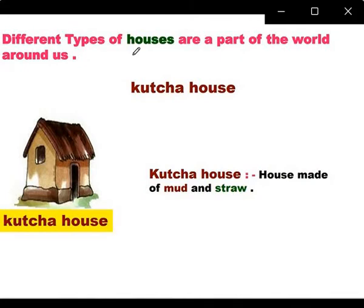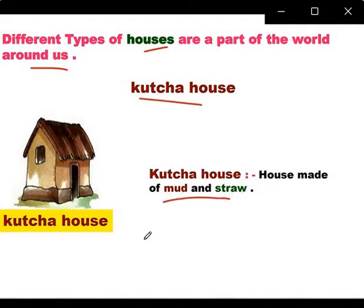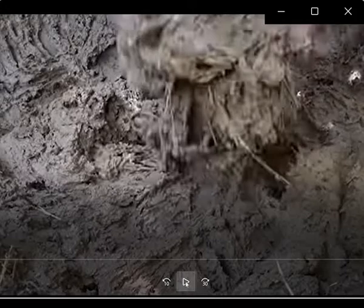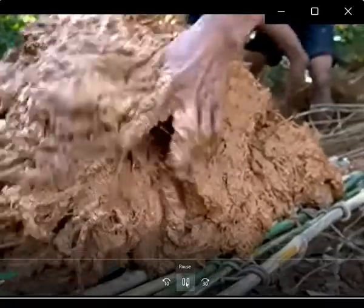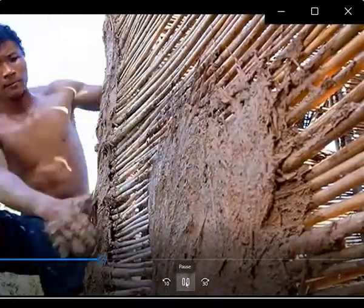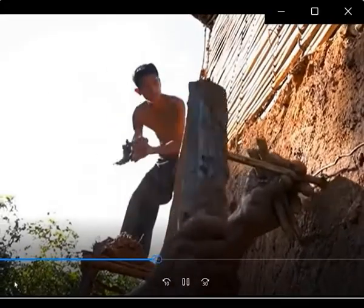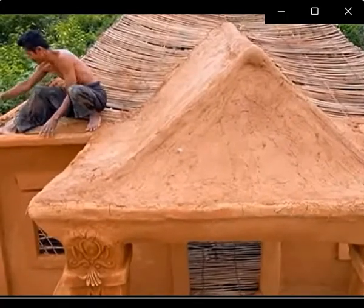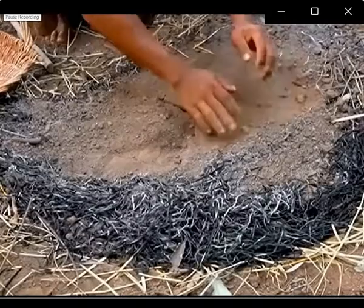Now, different types of houses are also part of our world around us. The house which is made of mud and straw is called a kaccha house.